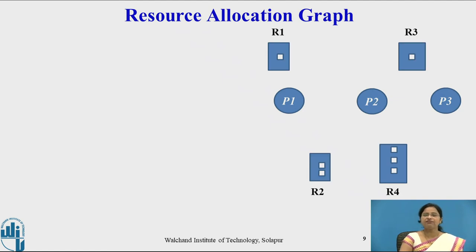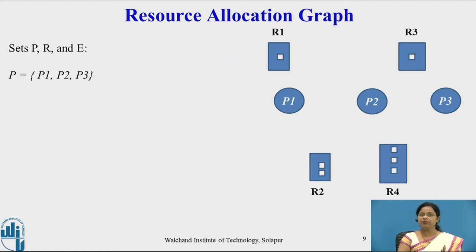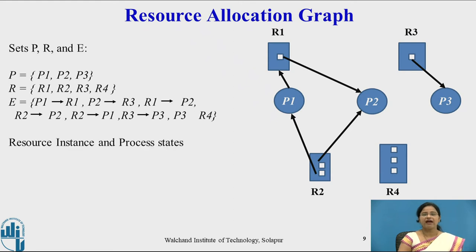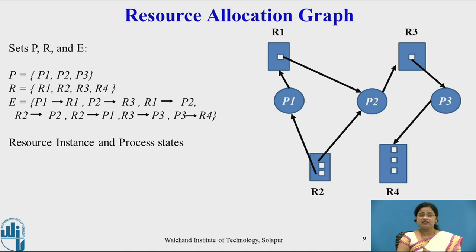Consider a resource allocation graph with three processes and four resources. The set of processes contains P1, P2, P3; the set of resources contains R1, R2, R3, R4. The set of edges includes: P1 to R1, R1 to P2, R3 to P3, R2 to P2, R2 to P1, P3 to R4, and P2 to R3. These edges show the resource instances and process states with request edges and assignment edges.